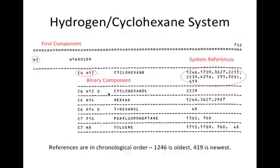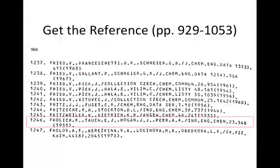This is a scan from Wichterle, and circled are the two system components — in this case, hydrogen and cyclohexane. It does not matter which component you look up first. The first list of numbers on the far right are the references. These are the numbers you look up in the back of the book. We're going to use reference 1246 as an example, so we flip to the back — in this case to page 960 — and reference 1246 is in the red box. This is a reference to a published article that you now have to look up.